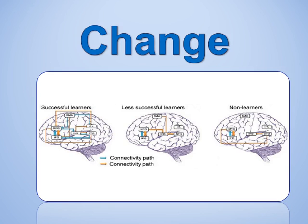Learning a new language changes your brain at any age. We all know that learning a second language is a great, healthy thing to do for your brain, but new research has discovered that it actually changes both the structure and function of your brain network, regardless of whether you're 4 or 84.